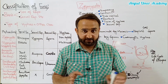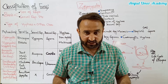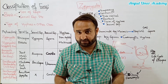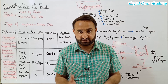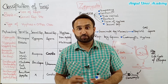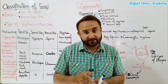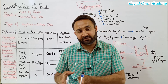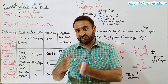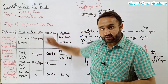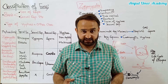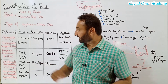Sexually reproductive structures ke lihaaz se dekha jaye to Zygomycota mein zygospores bante hain, aur Ascomycota mein ascospores bante hain jo ascus ke andar, sac-like structure ke andar bante hain, jabke Basidiomycota mein basidiospores bante hain jo basidium ke upar lagte hain. Ye reproductive structures different style ke hain, is liye fungi ki classification in ki basis par bhi ki jati hai. Type of hyphae ki base par bhi ki jati hai - kuch fungi septate hyphae rakhti hain, kuch non-septate ya coenocytic hyphae rakhti hain.